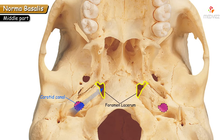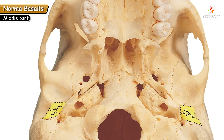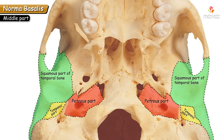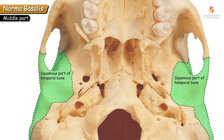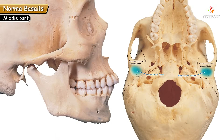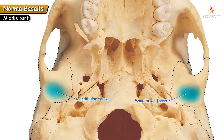The tympanic part of the temporal bone is a triangular bone occupying the angle between the petrous and squamous parts of the temporal bone. In norma basalis a little of the squamous part is also seen; it makes a depression called the mandibular fossa, which articulates with the head of the mandible to form the temporomandibular joint. Anterior to the mandibular fossa, the small bony elevation is the articular tubercle.